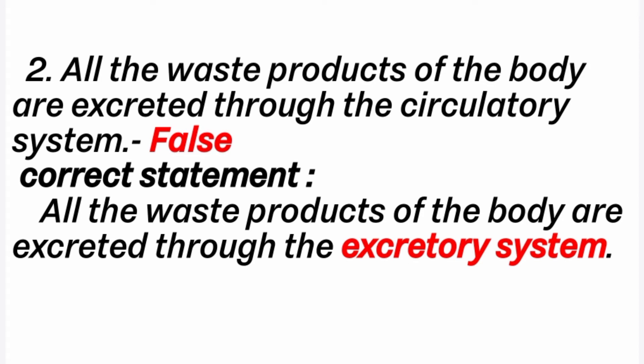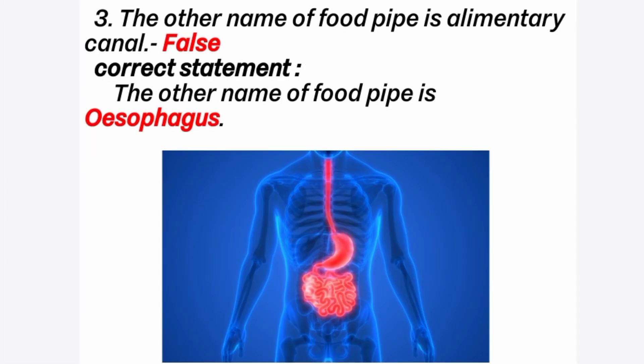Third question: the other name of the food pipe is alimentary canal. The answer is false. Correct statement: the other name of the food pipe is esophagus. The alimentary canal refers to the entire passage from the mouth to the anus.